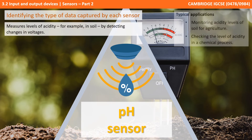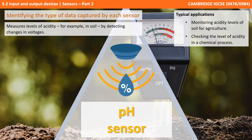Next we have pH sensors. These measure the acidity of, for example, soil, through changes in voltage. They can be used to monitor acidity levels in soil for agriculture and to monitor acidity levels in chemical processes.